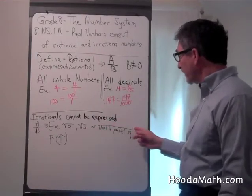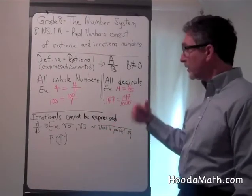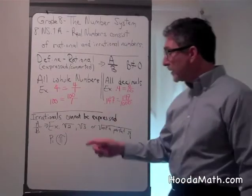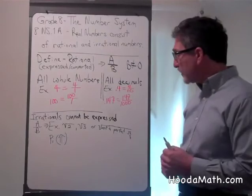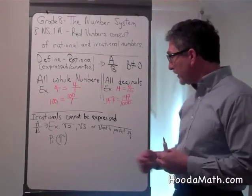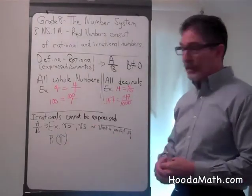If you take the square root of any number that is not a perfect square, you get an irrational number. Also, pi, which is used all the time in mathematics, particularly geometry, is also an irrational number.